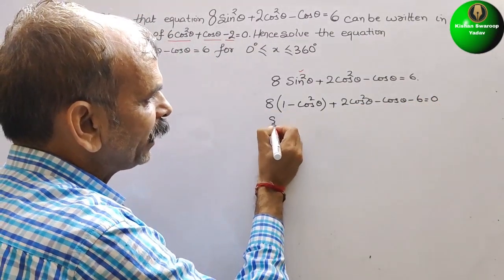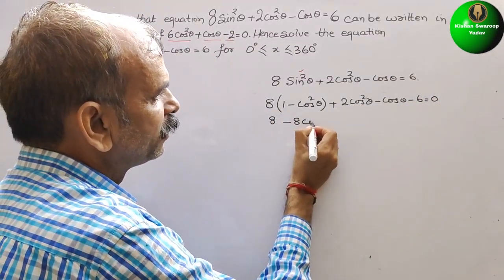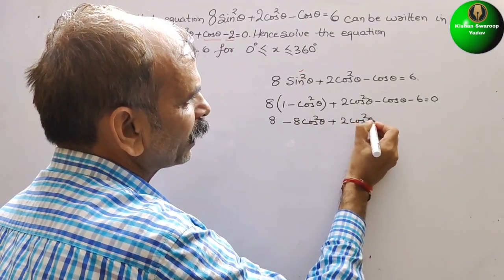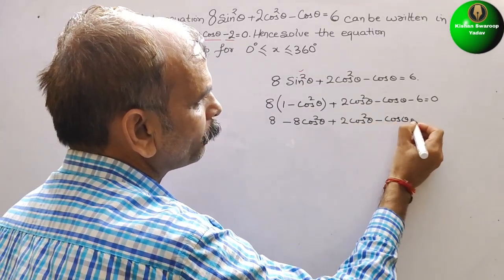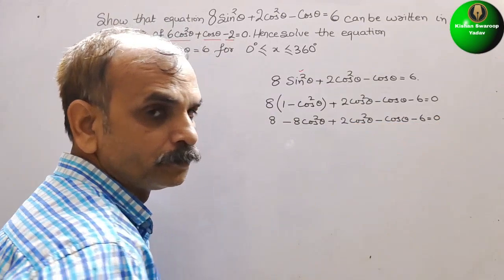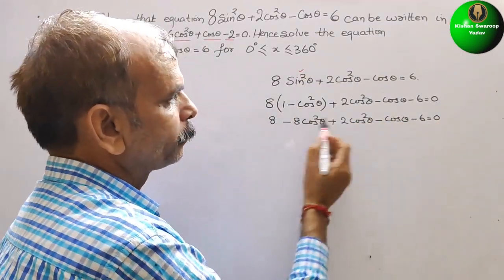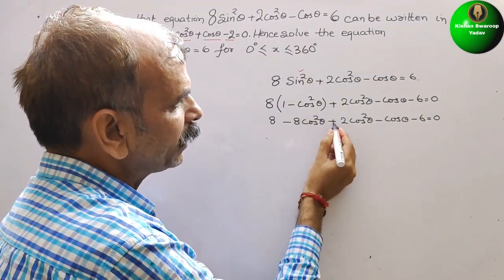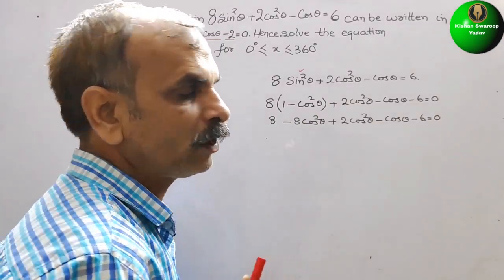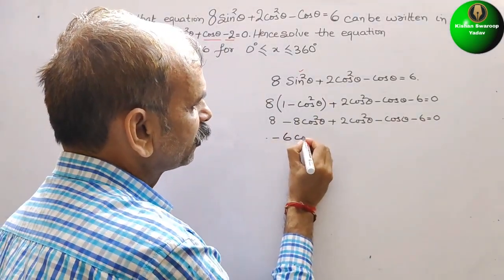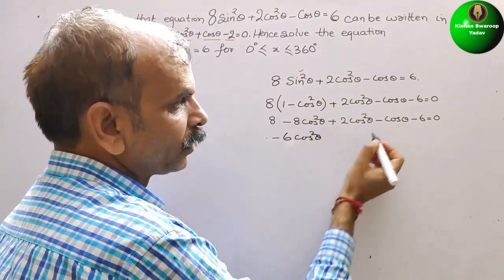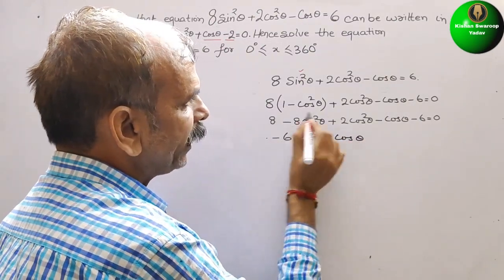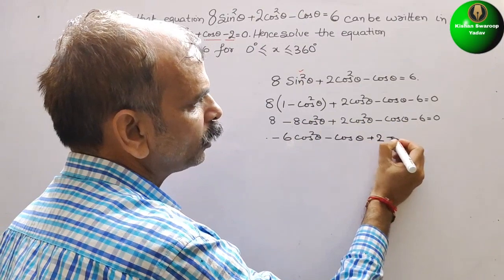Expanding: 8 - 8cos²θ + 2cos²θ - cosθ - 6 = 0. Combining the cos²θ terms: -8cos²θ + 2cos²θ gives -6cos²θ. Then minus cosθ, and 8 - 6 = 2. So we have -6cos²θ - cosθ + 2 = 0.